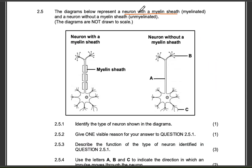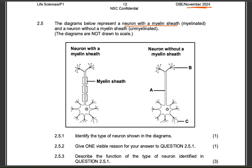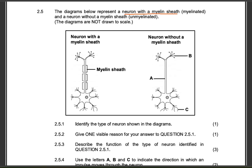The second question is from November 2024. The diagrams represent a neuron with a myelin sheath — myelinated — and a neuron without a myelin sheath — unmyelinated. Please note that the diagrams are not drawn to scale.